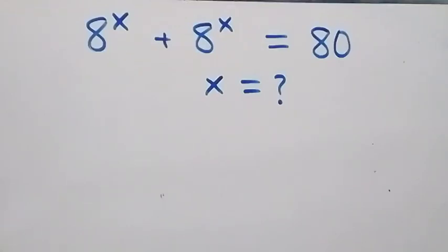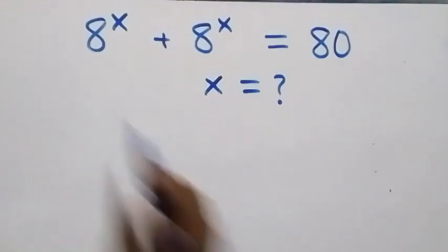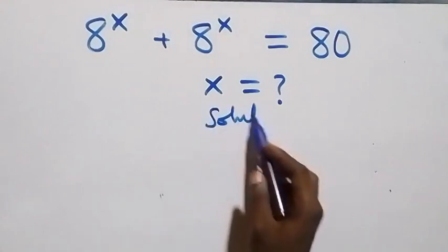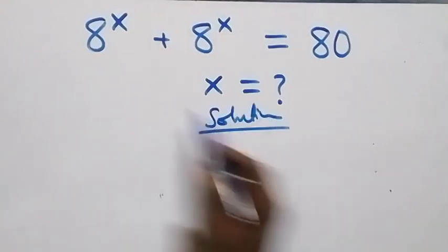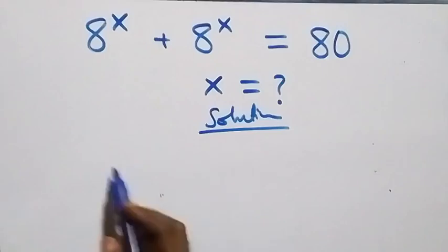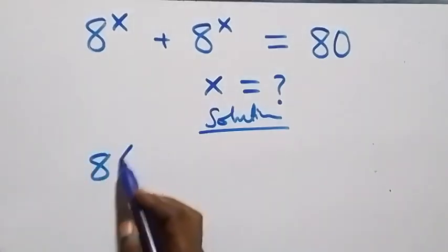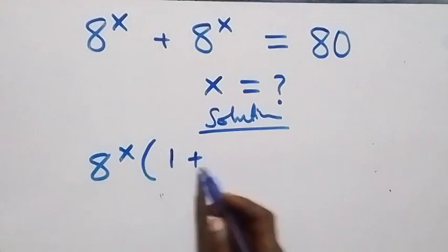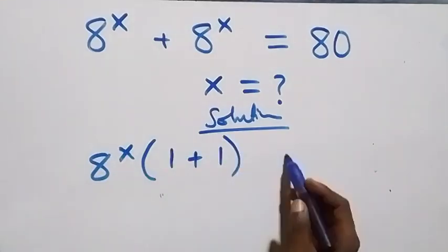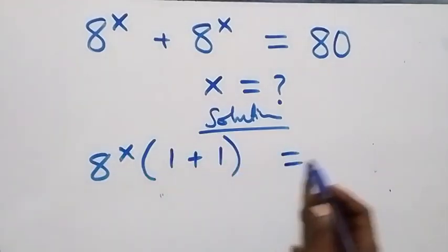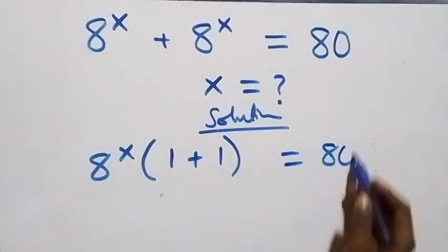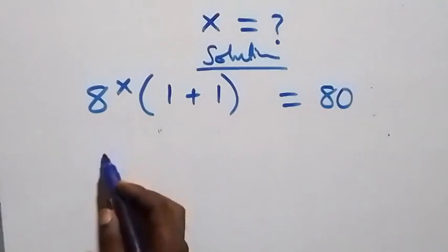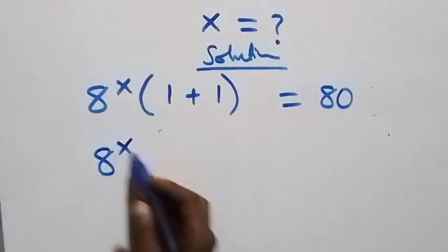Hello, you're welcome. Here we solve a nice exponential equation. We factor 8 raised to power x out, and we have one plus one left, close bracket, equals 80 on this side.